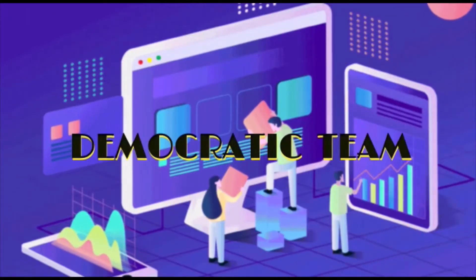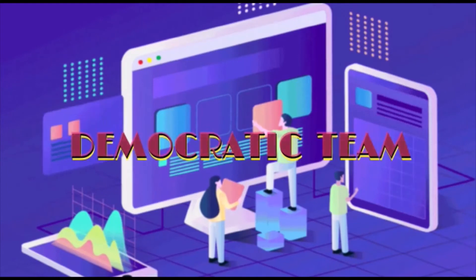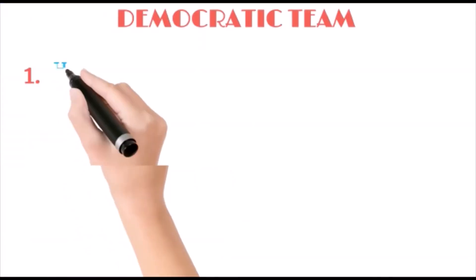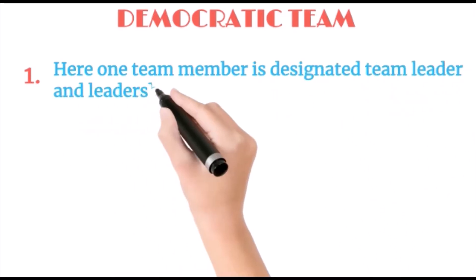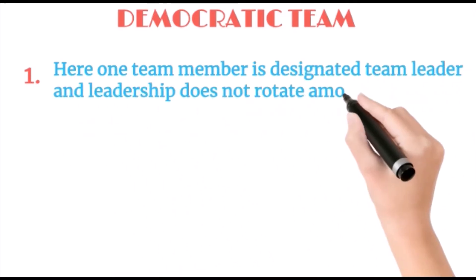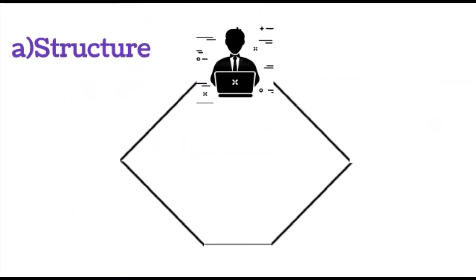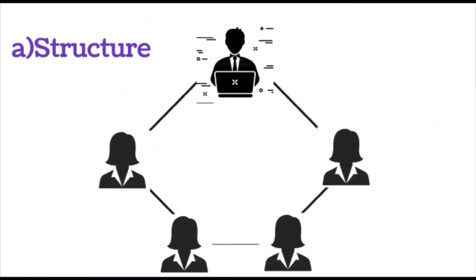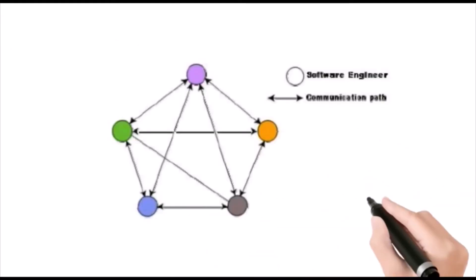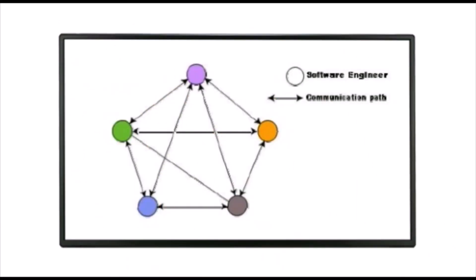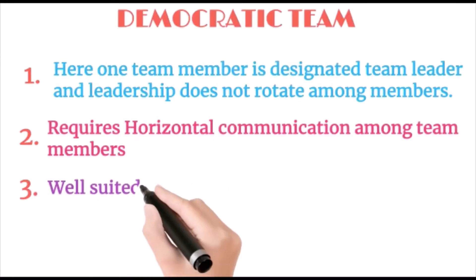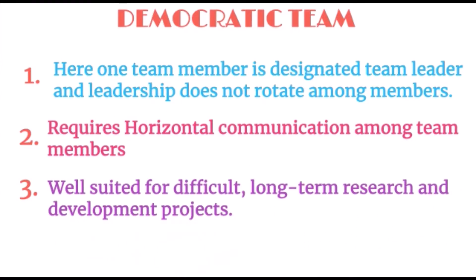Second comes democratic team. Here one team member is designated team leader and leadership does not rotate among members. The structure has many employees working under a leader. Team leader requires horizontal communication among team members. Well suited for difficult, long-term research and development projects.